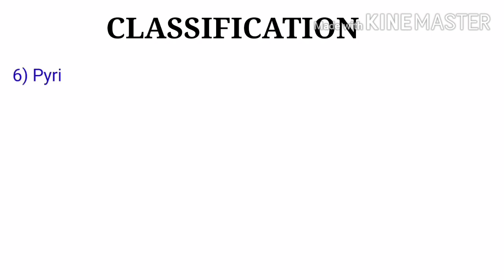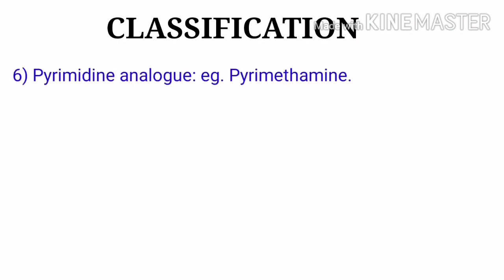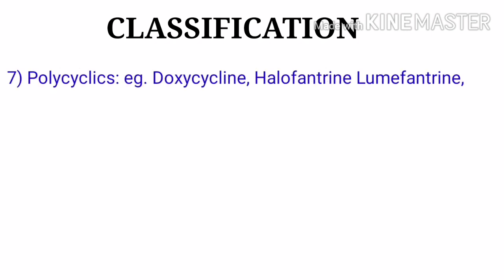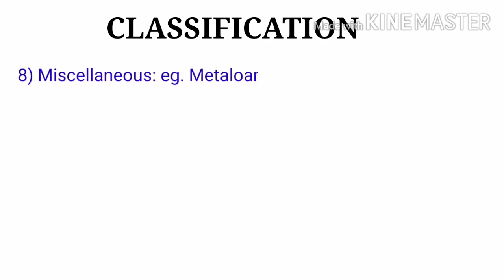The next one is pyrimidine analogs. Example is pyrimethamine. The next one is polycyclics. Examples are doxycycline, halofantrine, pyronaridine, and lumefantrine. The eighth type is miscellaneous. Examples are metalamine and sulfadoxine.